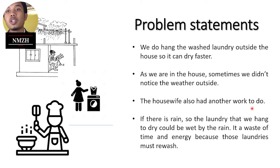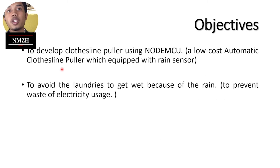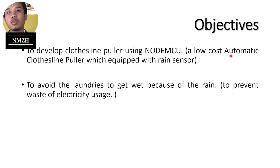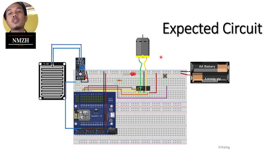The objective of the project is to develop a clothesline pulley using a NodeMCU to avoid laundry getting wet because of the rain. This is the expected circuit, which has the NodeMCU itself as the brain of the circuit.